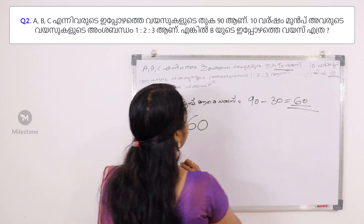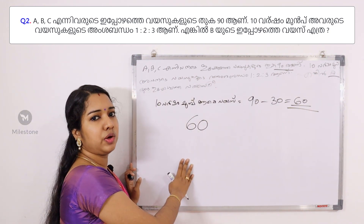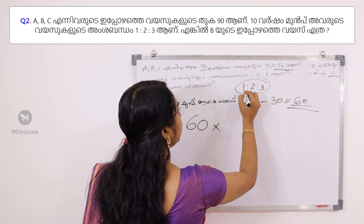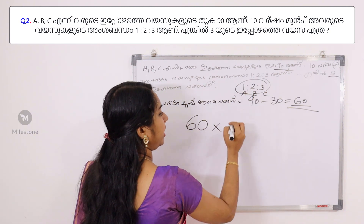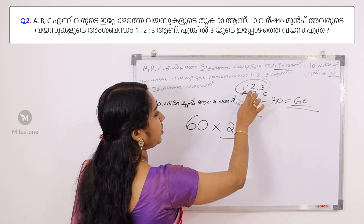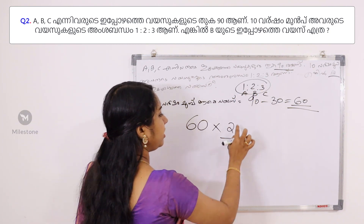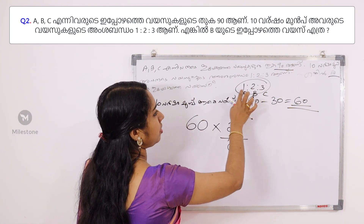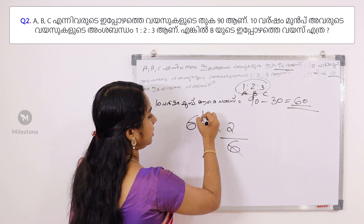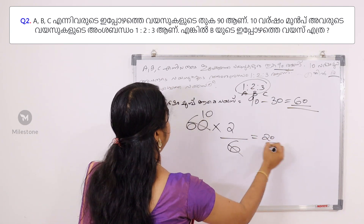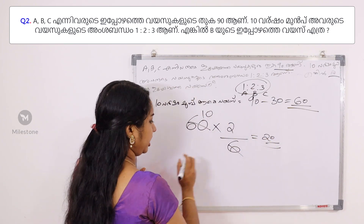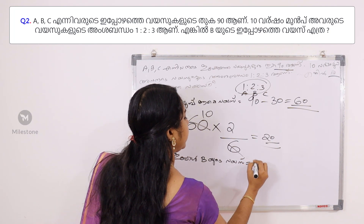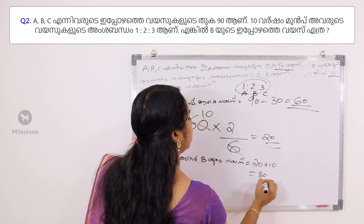If you have 10 times before B, do you want to do this? 1 is to 2 is to 3. This is A, this is B, and this is C. B is 2. Now, 60 is 10 times. Then 20 times. In 10 times, B is 20. So now B is 20 times.